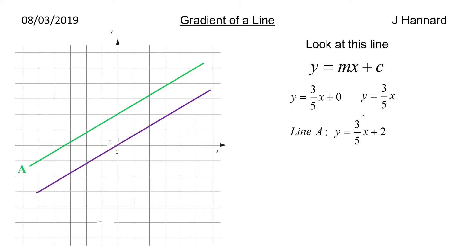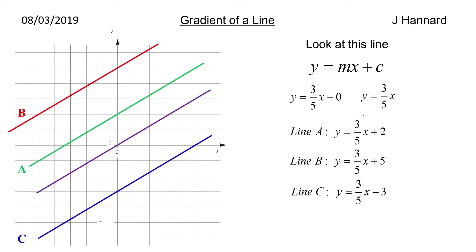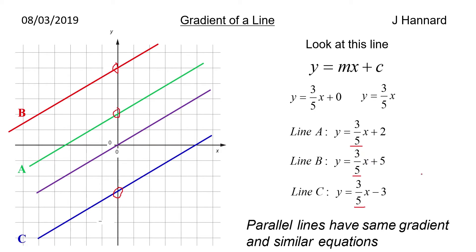There's another line there — you can use the same method. We know what line A is, line B, and line C. The intercepts are minus 3, 2, and 5. Notice something about these lines: they've all got the same gradient. Parallel lines have similar equations — they all have the same gradient, the same slope, so all of them have 3 fifths in front of their x. They've all got different intercepts, but they're all very similar lines.